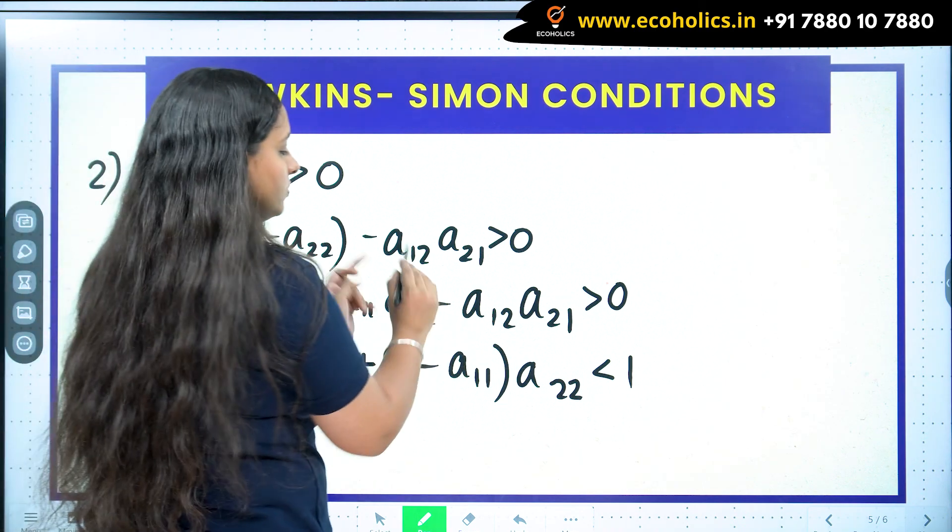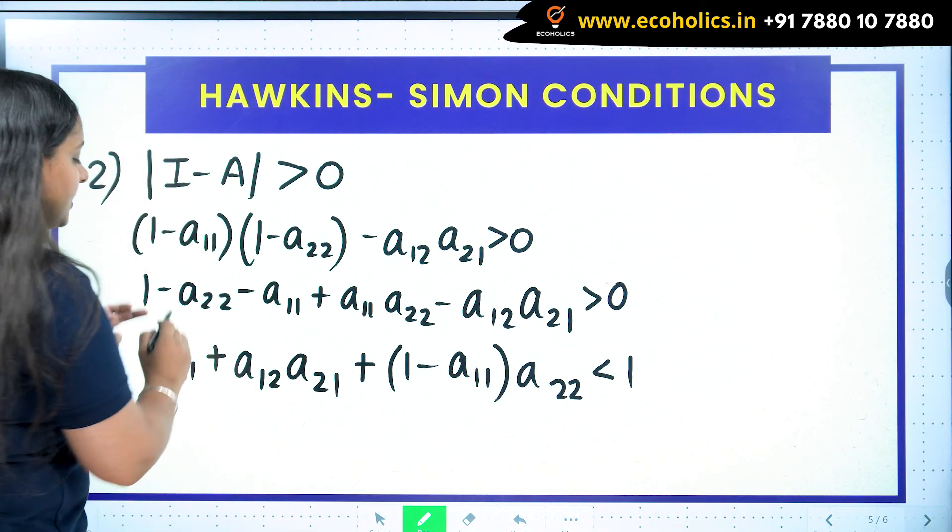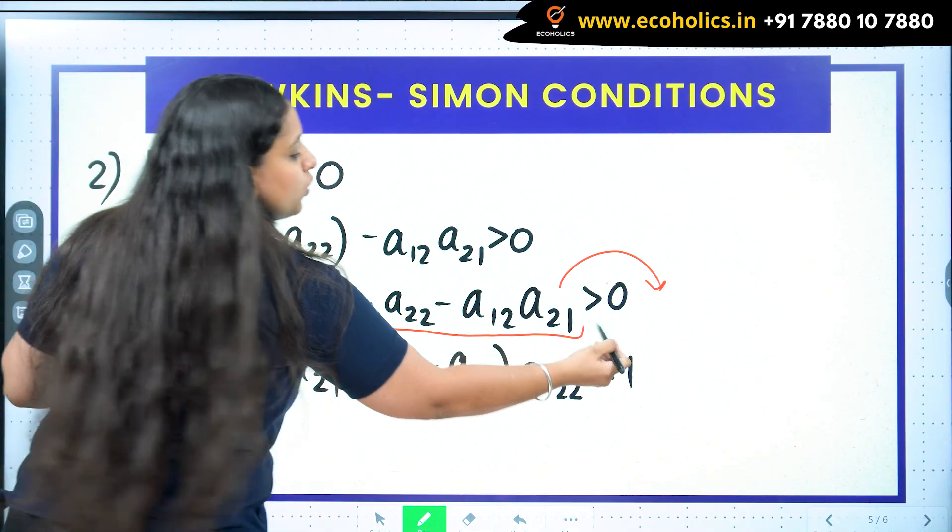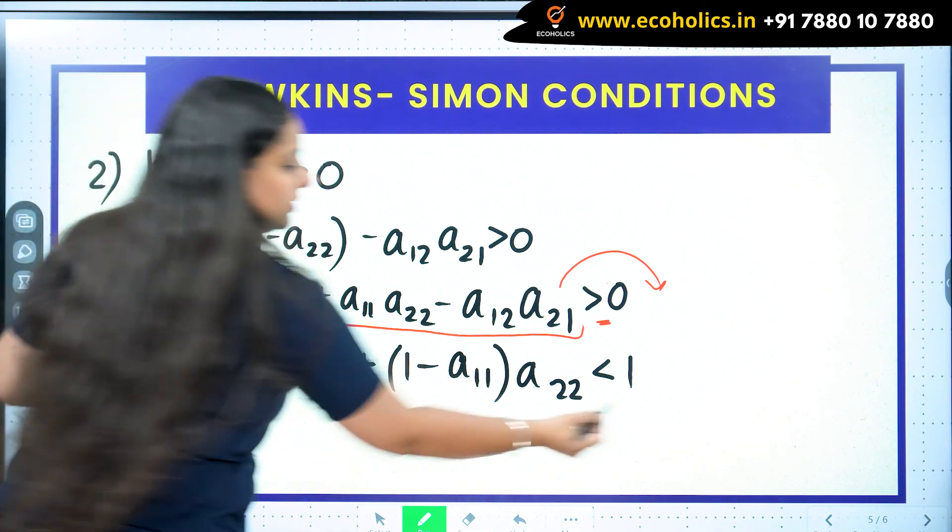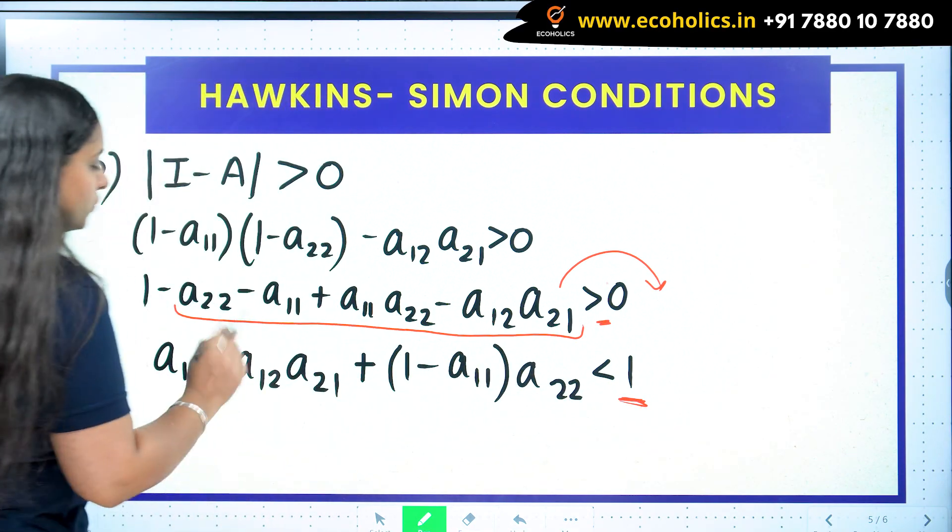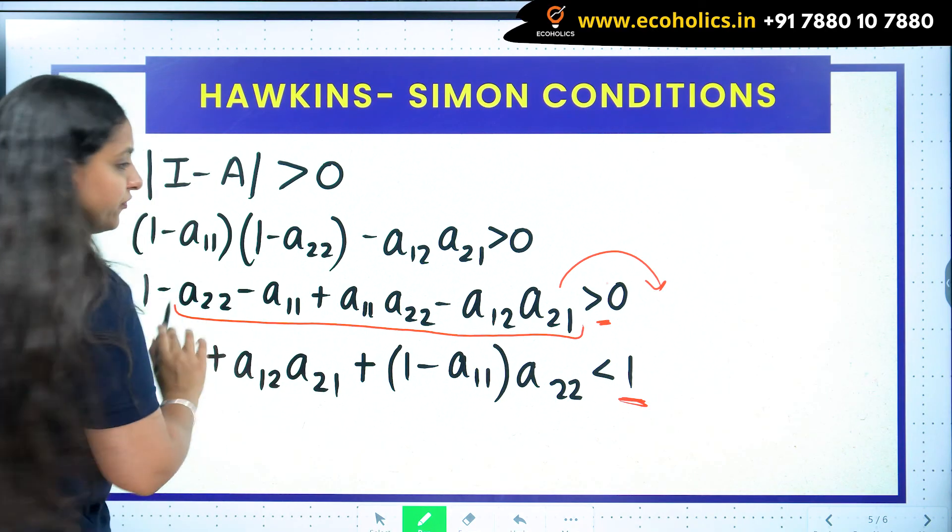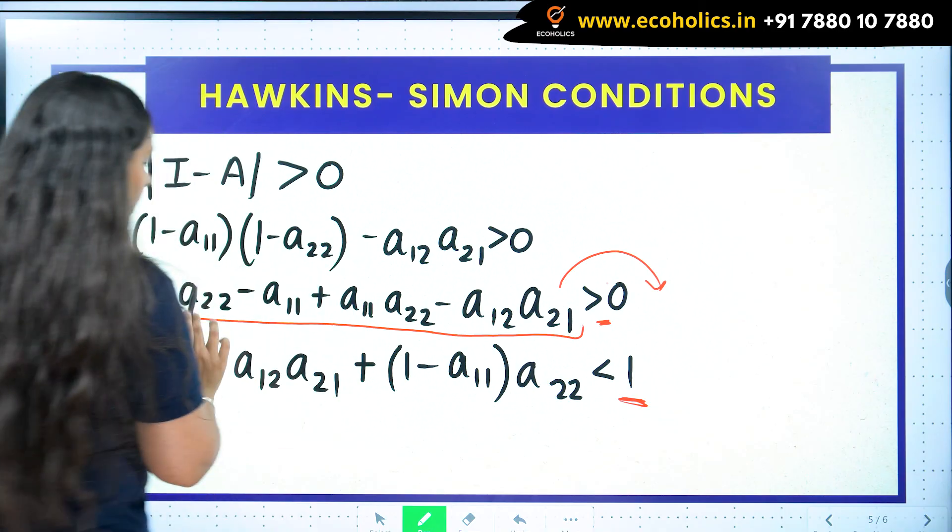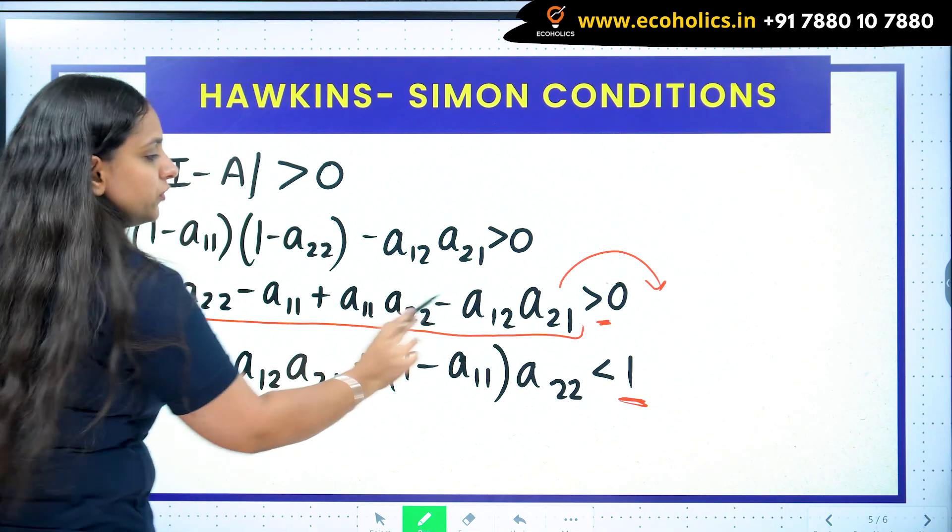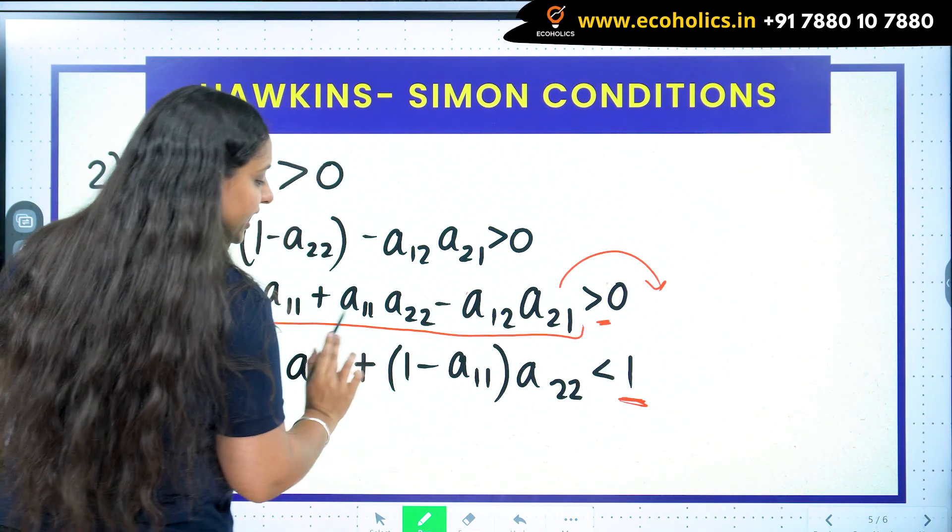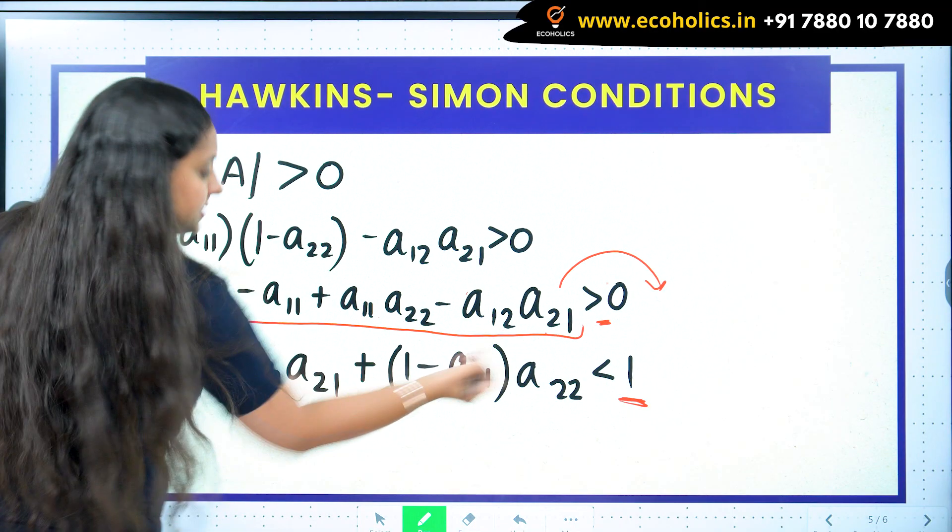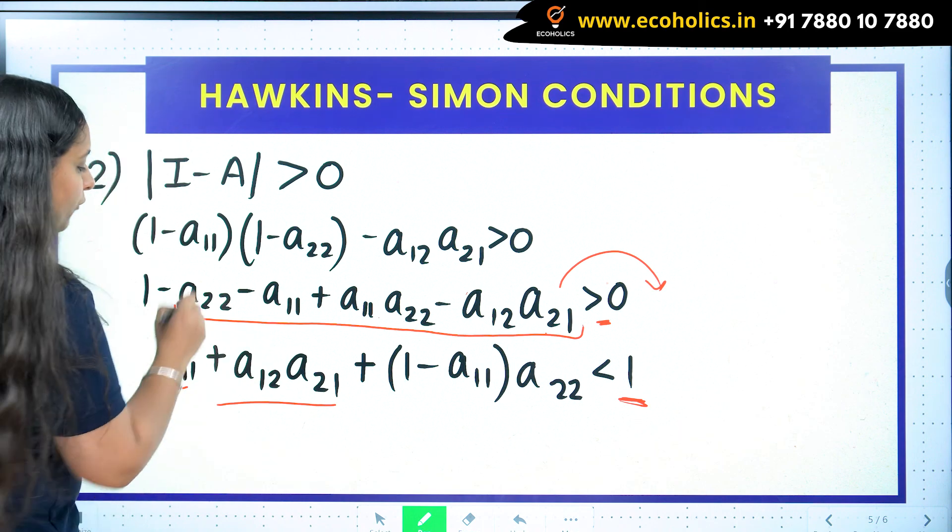The same thing—what I have done is I will be taking all these terms to the other side so that this inequality faces 1 on one side, as you can see here. So what is going to happen now? If all of these terms are going there, a_11 will become positive, a_22 will become positive, this will become positive, but a_11*a_22 will become negative. So a_11 then this term a_12*a_21. Now from this and this term, the third, second, and fourth term, I have taken a_22 common.